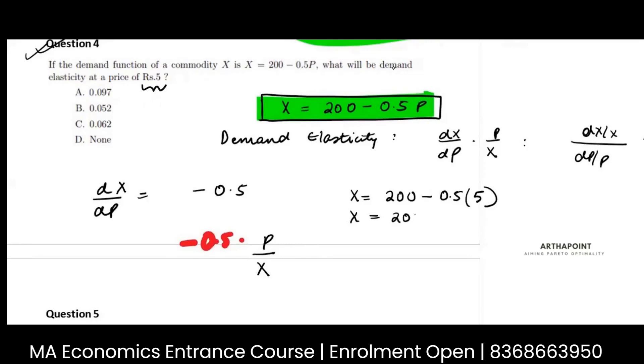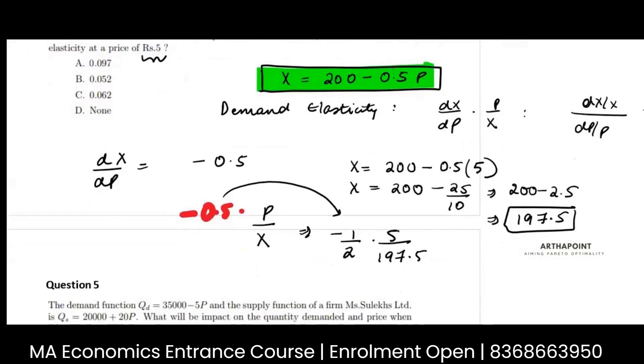X will be 200 minus 25 by 10, so 200 minus 2.5, which is 197.5. Now just put the value. So minus half, 0.5 is minus half, P is 5, and this is 197.5. Just solve it. I think I was getting none of the above but just give it a try.